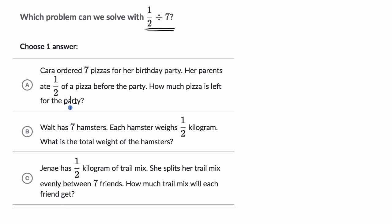All right, let's go through each of the choices. Kara ordered seven pizzas for her birthday party. Her parents ate one half of a pizza before the party. How much pizza is left for the party? All right, so what's going on here? She started with seven pizzas.